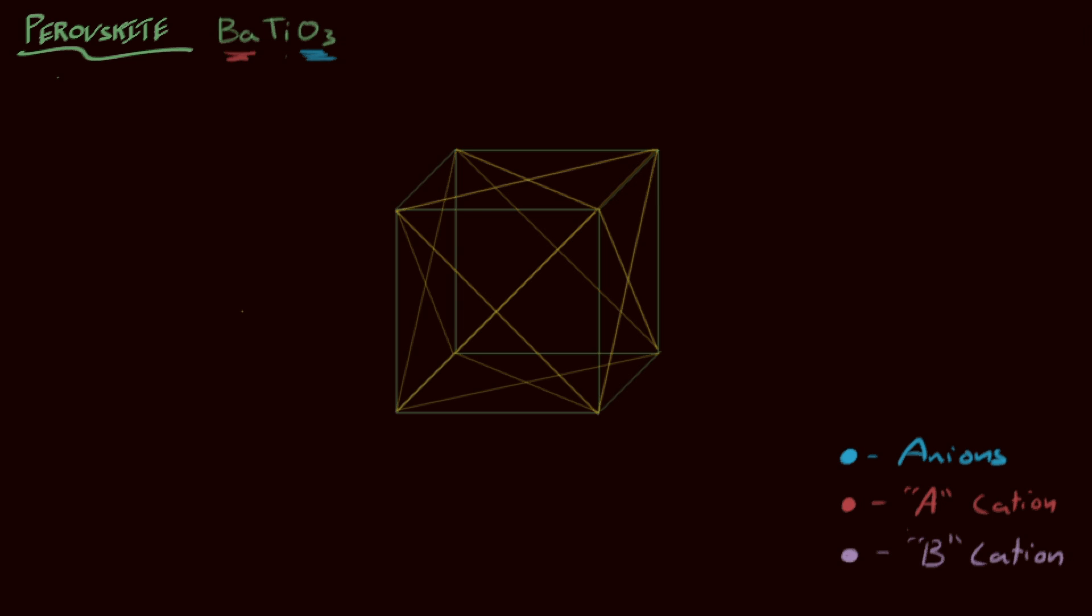So we're going to put the anions in the center of each of these faces, so we've got the face diagonals, the 1-1-0 directions, all crossings, so right in the middle is where we should have the anions. I've put those in, and I can get rid of the face diagonals to clean it up a bit.